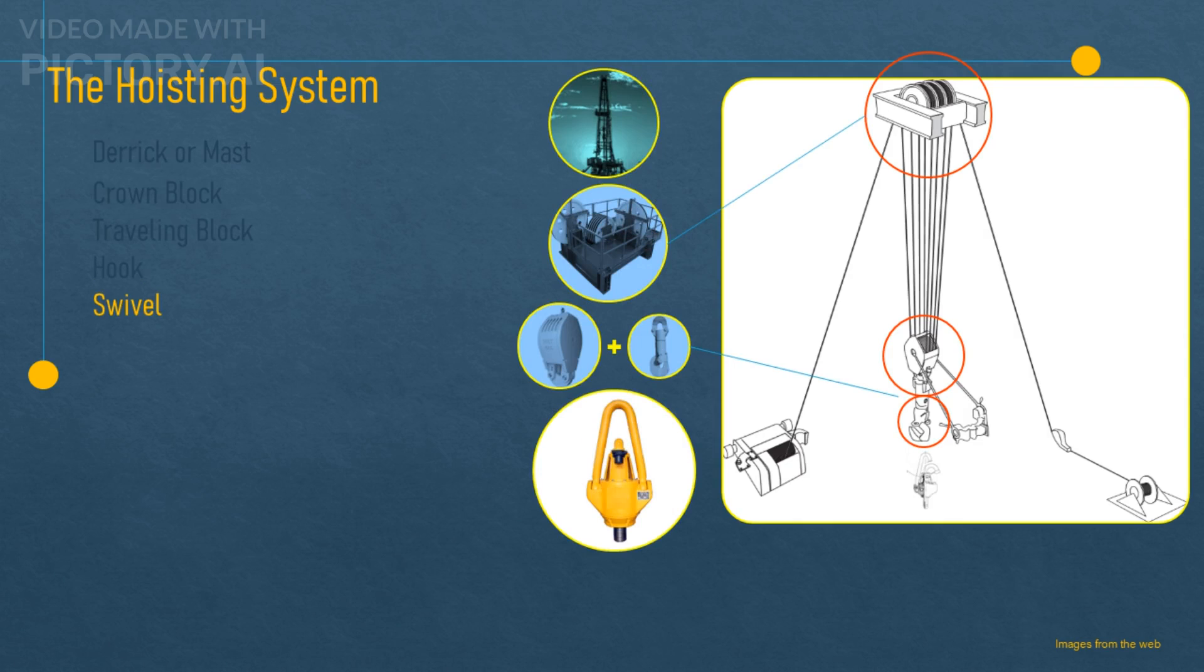The swivel. This is a device that connects the hook to the drill string and allows for rotation of the drill string while maintaining a seal for fluid circulation. The swivel also transfers weight from the drill string to the hook.